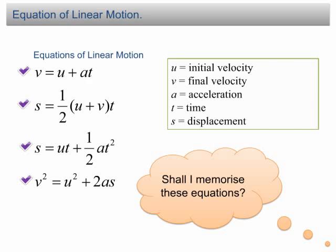In SPM, an equation list will be given in paper 1 and paper 2. All of these equations are in the list except the second equation, s equals 1 over 2 u plus vt. However, from my experience, if you don't memorize it, you probably don't know when to use it. So it is important for you to memorize all of these equations and don't try to skip.